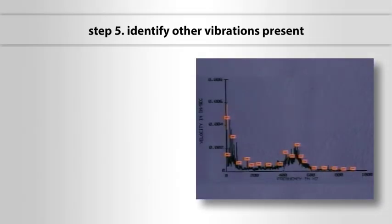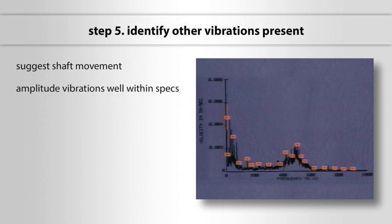Step 5: Identify other vibrations present. When we mark the one-times with the cursor, the analysis software automatically identified several harmonics. This would suggest shaft movement, but remember, these are tiny, low-amplitude vibrations, well within specs.